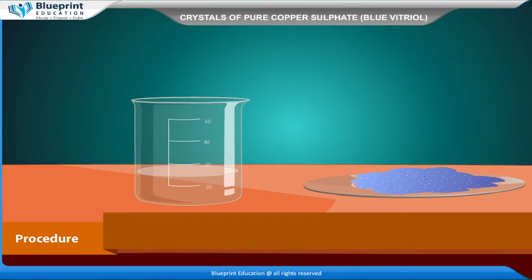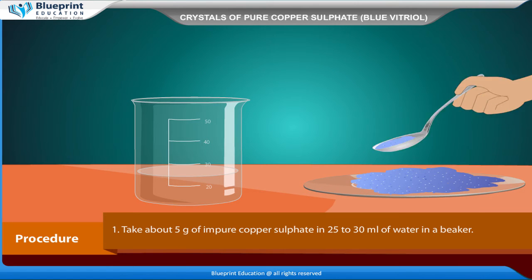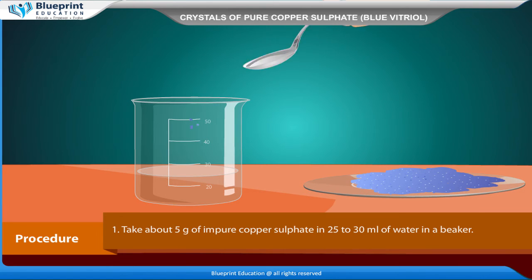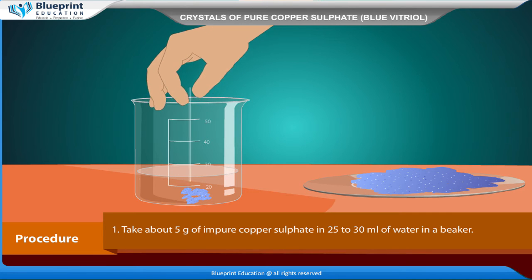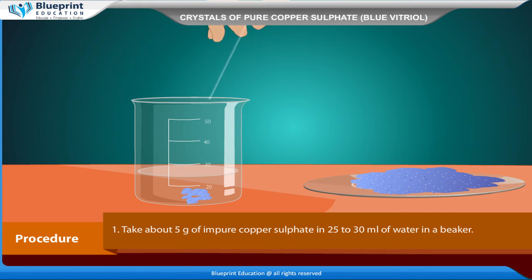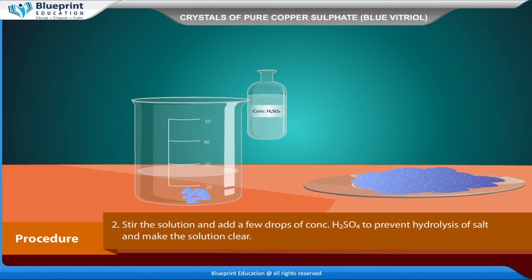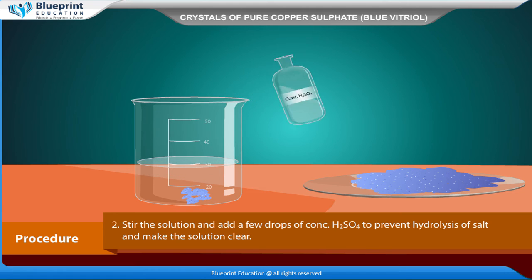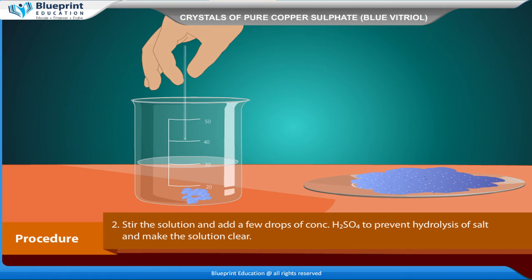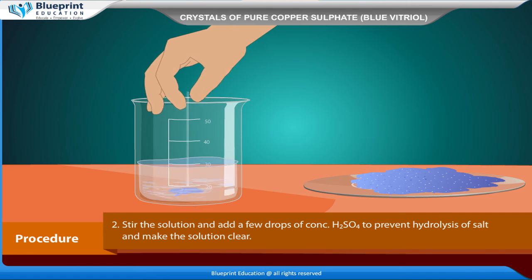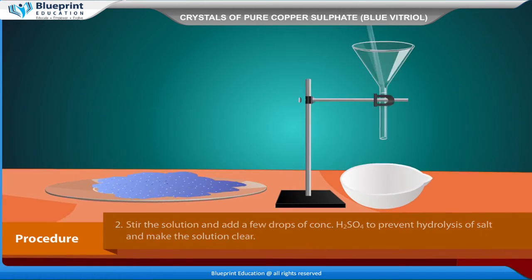Procedure: Take about 5 grams of impure copper sulfate in 25–30 ml of water in a beaker. Stir the solution and add a few drops of concentrated H₂SO₄ to prevent hydrolysis of the salt and make the solution clear.